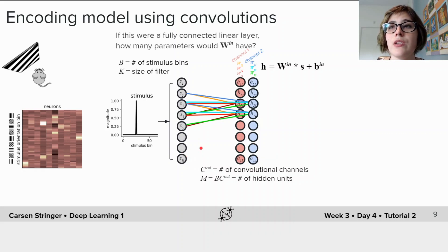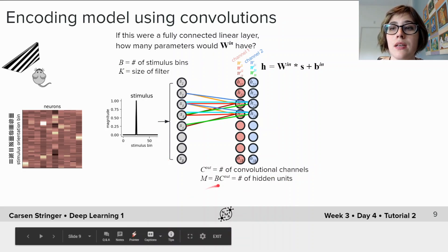So if this were a fully connected layer, like the linear layers that we used in the previous tutorial, how many parameters would W have? All right let's think about it. We have an input which is size b and we have b times C_out units, so if we had a fully connected linear layer we would have b times b times C_out number of weights.